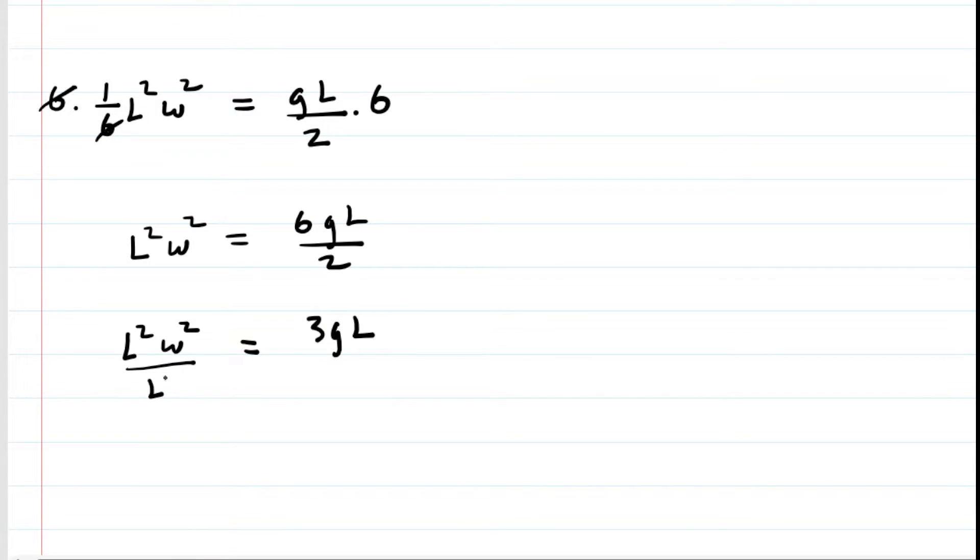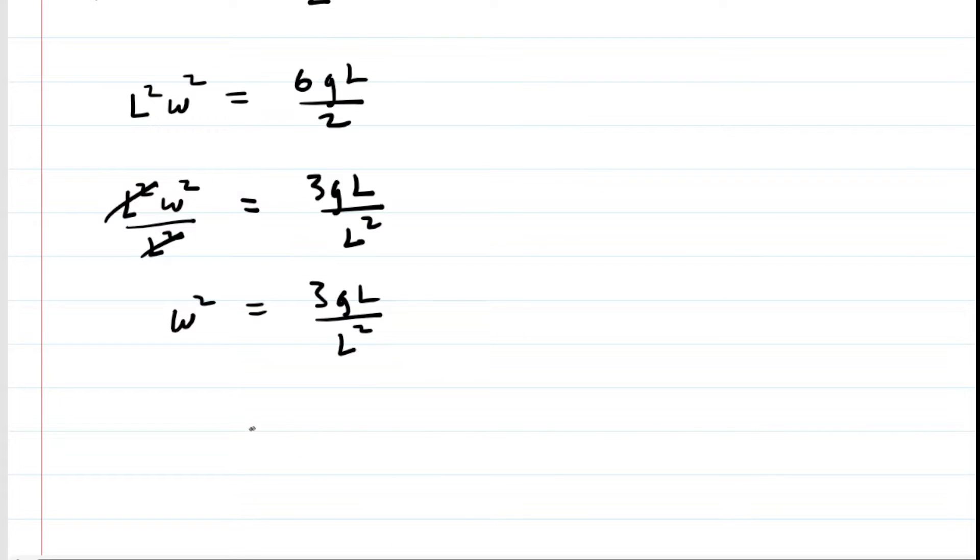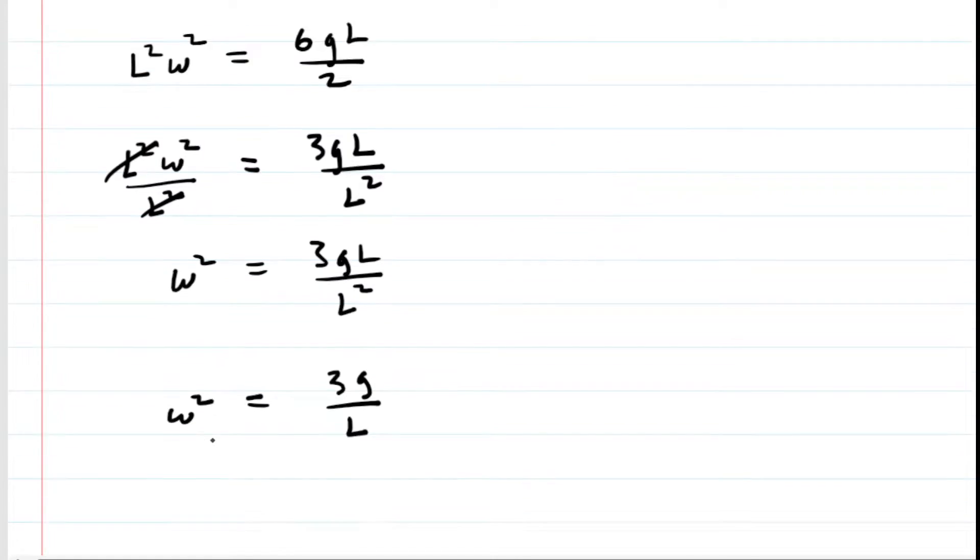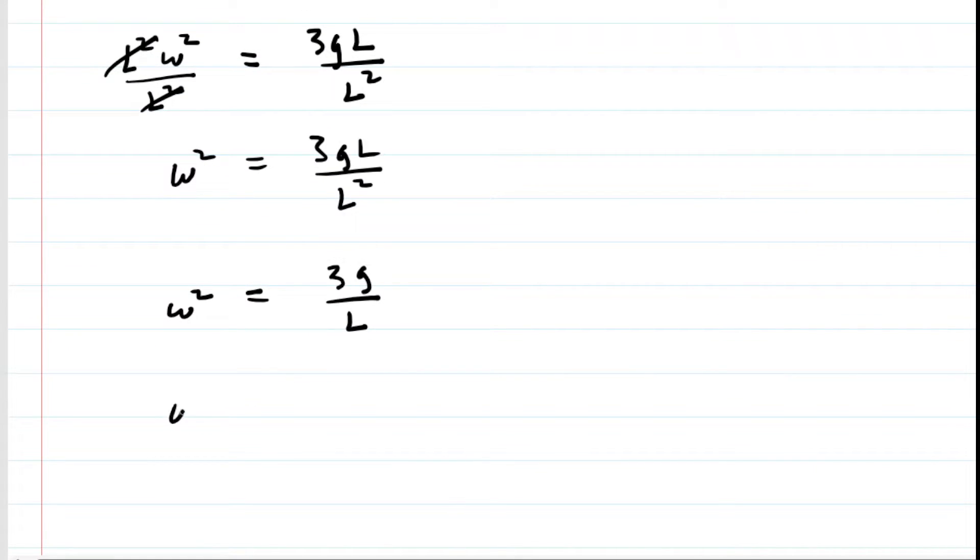Let us divide both sides of this by L squared to cancel that term on the left-hand side. On the right-hand side, we can cancel a factor of L. So we would be left with 3G all over L. And then finally, taking the square root of both sides, we can see that the angular speed is equal to the square root of 3 times G divided by L.